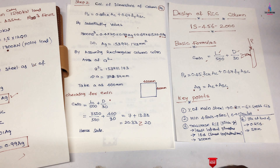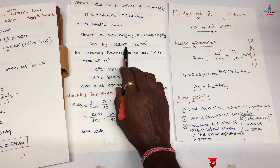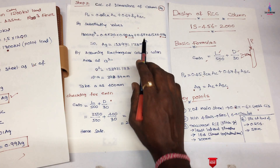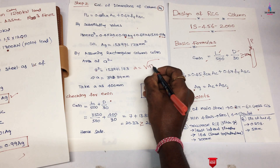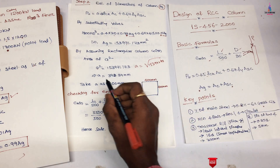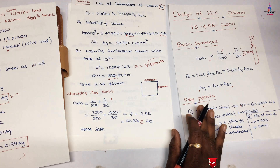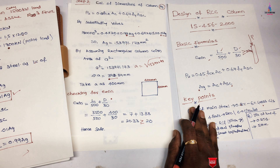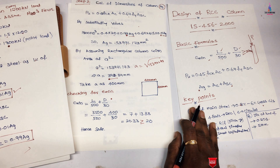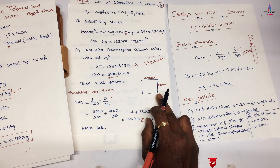Assuming a square column section with area = a², we get a² = 153,971 mm², so a = √153,971 ≈ 392.39 mm. Rounding up to the next practical dimension, we adopt a column cross-section of 400 mm × 400 mm.